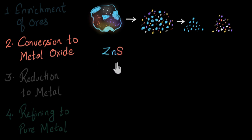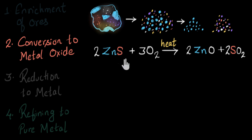Since this compound is not an oxide, we will first have to convert this to a metal oxide. We will heat this with excess oxygen, and that's how zinc sulfide will convert to zinc oxide.